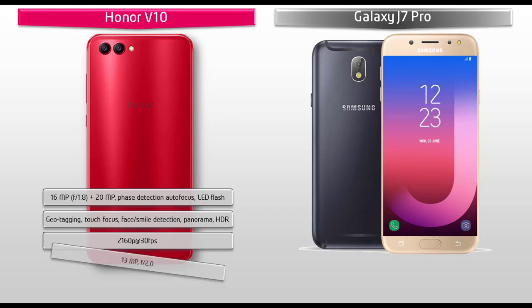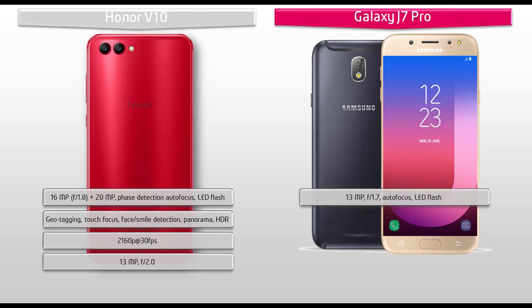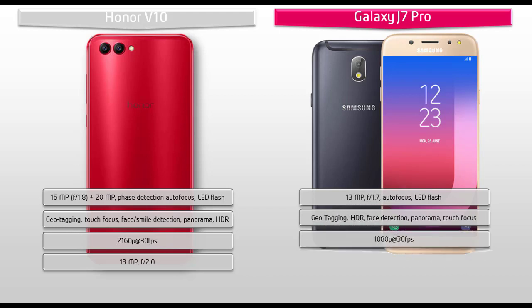Honor V10 also comes with a secondary camera of 13 megapixels with f/2.0 aperture for selfie shootouts. Moving on to the primary camera of Galaxy J7 Pro, it is equipped with a 13 megapixels primary camera with f/1.7 aperture, autofocus and single LED flash, geotagging, touch focus, face detection, panorama and HDR, with video shootout at 1080p at 30 frames per second. Galaxy J7 Pro also comes with a secondary camera of 13 megapixels with f/1.9 aperture for selfie shootouts and with LED flash.